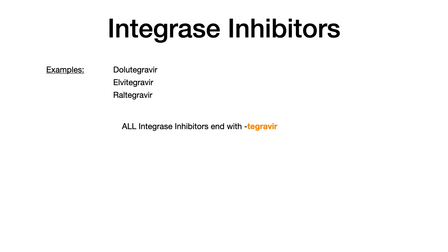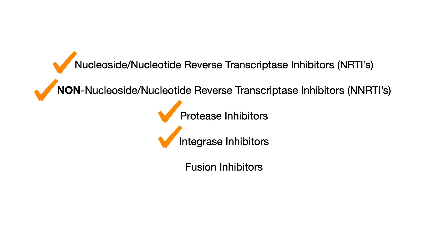Examples of integrase inhibitors: dolutegravir, elvitegravir, and raltegravir. All integrase inhibitors end with 'tegravir,' and you don't even need a mnemonic here because the word 'tegra' is in the name integrase — tegravir tells you that you're talking about an integrase inhibitor. We are crushing these different drug categories: you know NRTIs, NNRTIs, protease inhibitors, and integrase inhibitors.